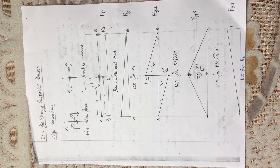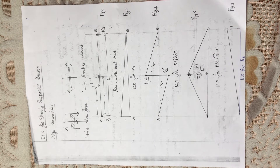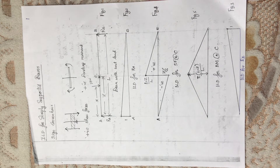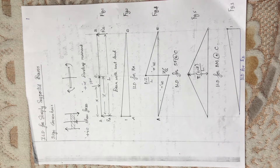Another example is bridge girders, which carry loads that roll over them from one end to another. Influence line diagrams are a curve or graph that represents a function — like a reaction at the support, shear force at a section, or bending moment at a section — for various positions of a unit load on the span of the structure.